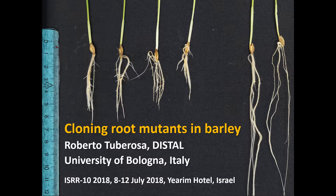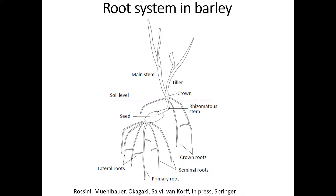We're talking about cloning root mutants in barley using tilling material — a similarity with the previous talk. I don't have to go through too many details, because the previous speaker very clearly showed how basically we have two root systems in wheat and also in barley: a seminal system and a more adult system that develops from crown shoots. They may have different roles and different plasticity, and particularly under abiotic stress conditions like drought, they may have very important roles in different ways.